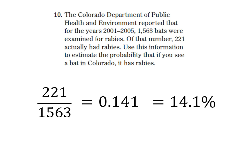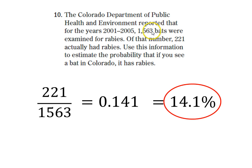So this means that 14.1% of the bats that were found and studied actually had rabies — that's the only information we have. So if we randomly see a bat in Colorado, our best estimate of the chances that it has rabies is 14.1%, based on the relative frequency from the data gathered. There is no other information to use, so there's a 14.1% chance that a bat you find in Colorado actually has rabies.